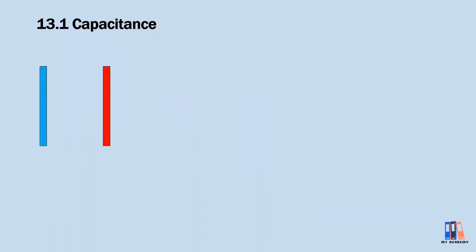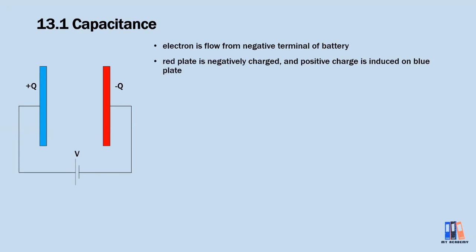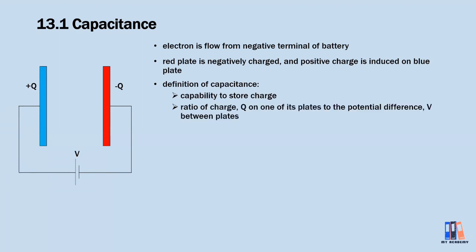First, we look at the capacitor which is made of two parallel plates. If we have a battery that connects to the capacitor, the electrons will flow from the negative terminal of the battery to the plate. The red plate here will be negatively charged and it will induce a positive charge on the blue plate. The definition of capacitance is that it describes the capability to store charge — more specifically, it is the ratio of the charge on one of the plates to the potential difference between the plates.